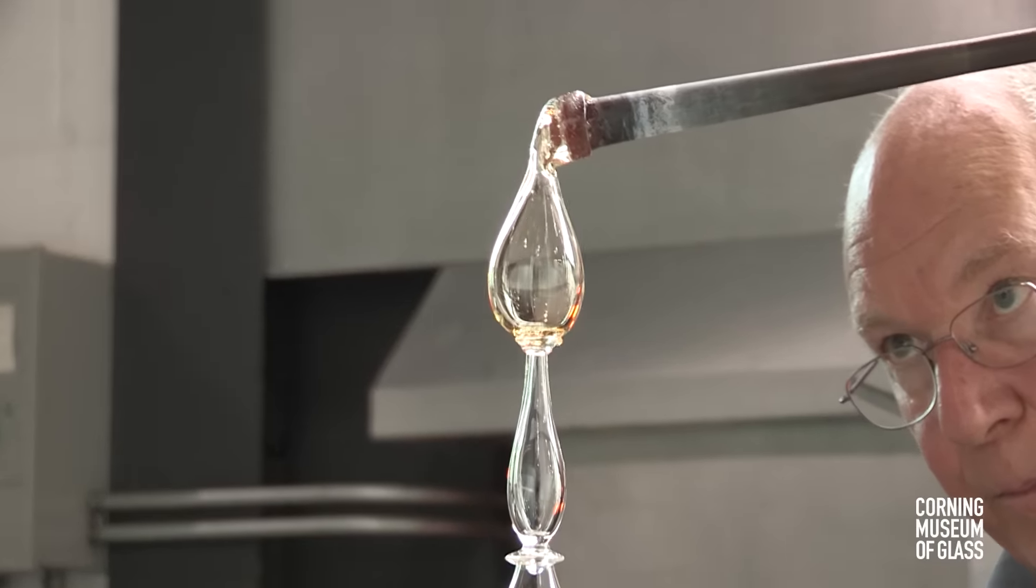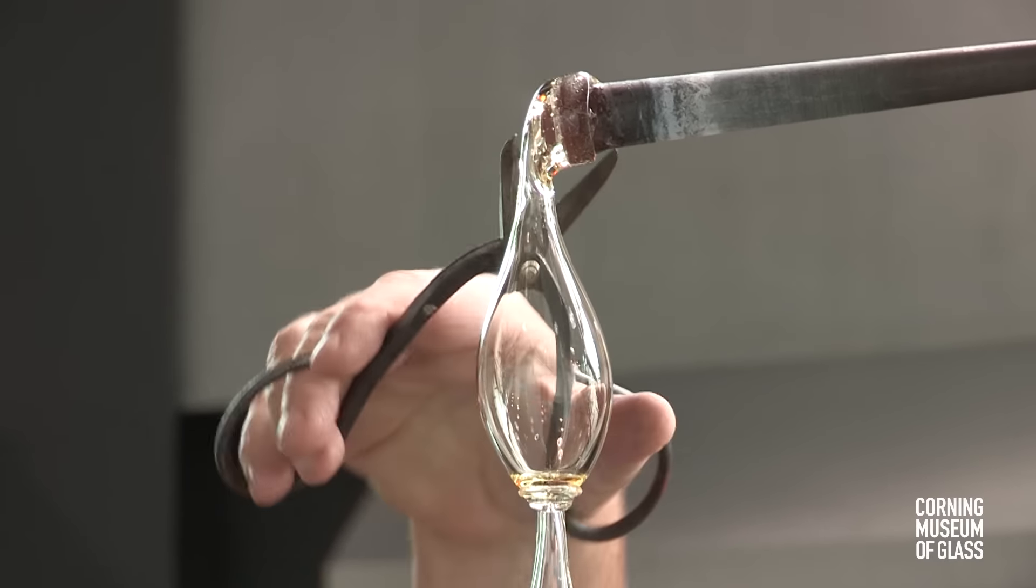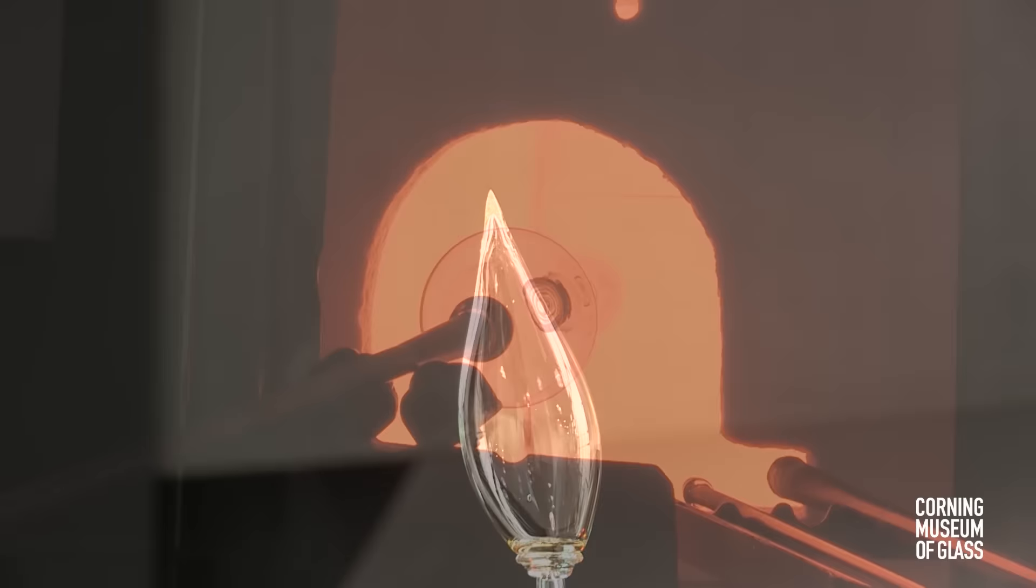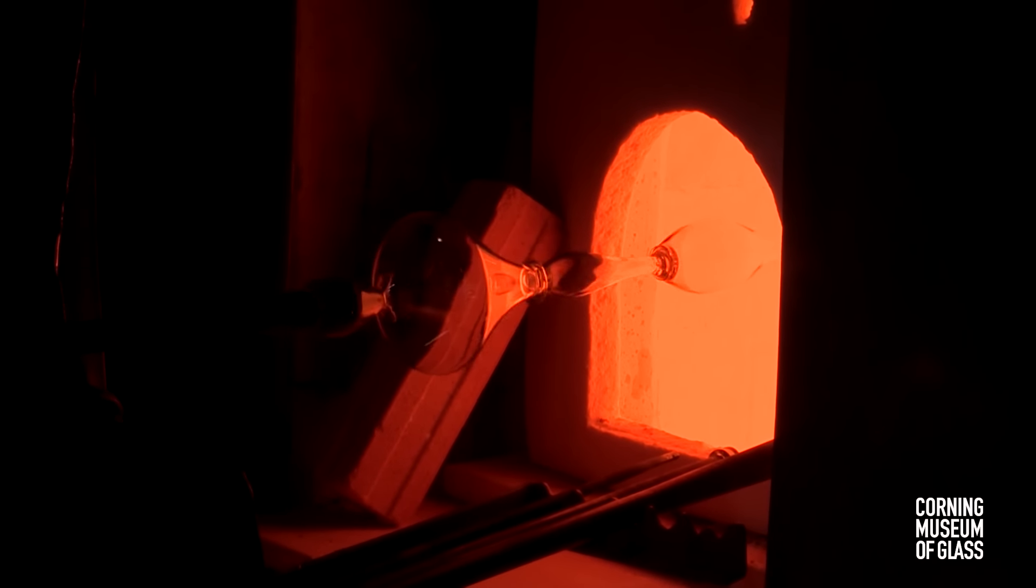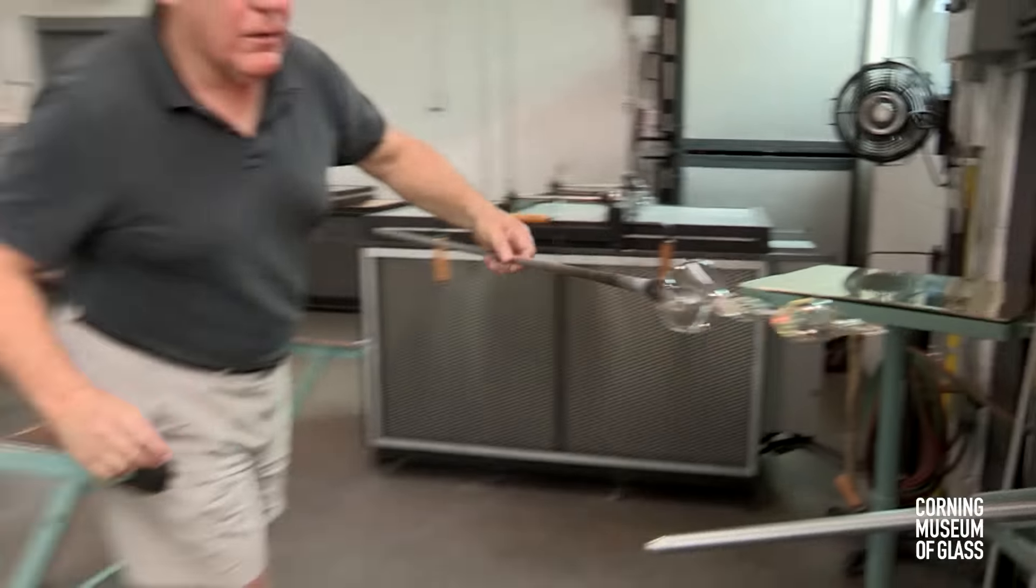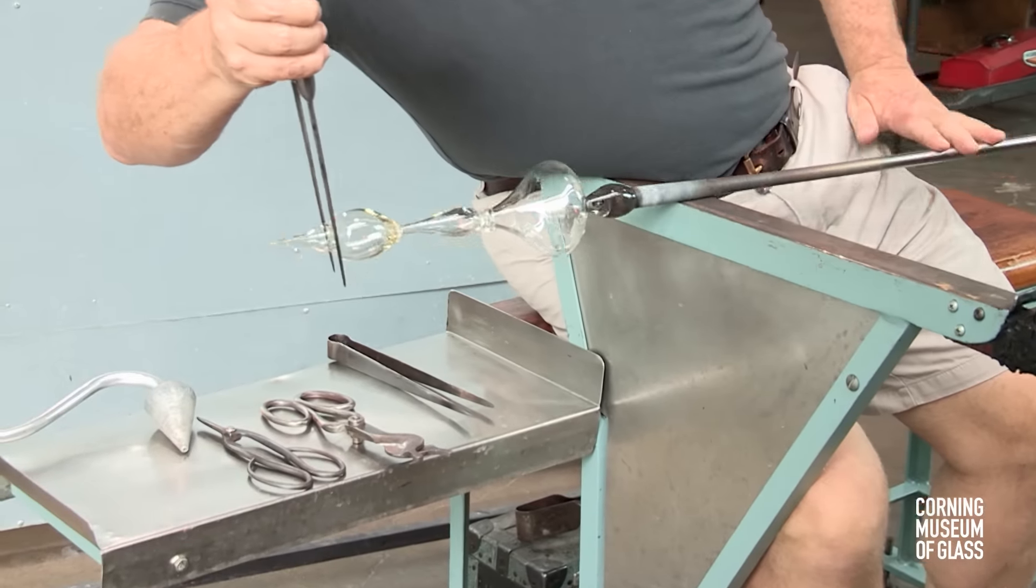A third bubble of glass is lowered onto the merese. This will become the foot. Throughout the process, the entire vessel must be occasionally flashed in the furnace to make sure that all parts stay well over a thousand degrees. Otherwise, they might crack.